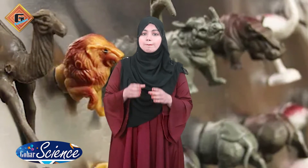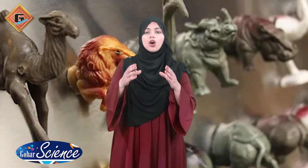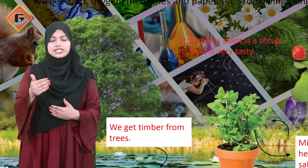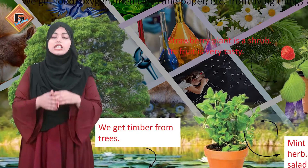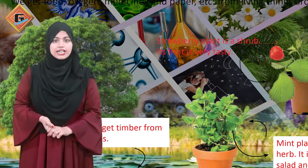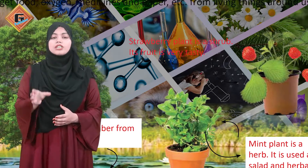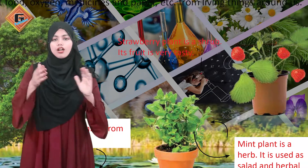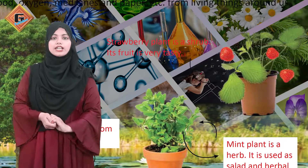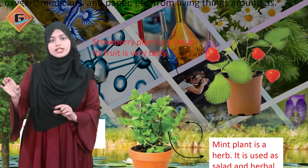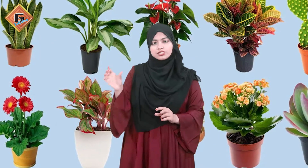To aap unke saamne students ko usme se vertebrates aur invertebrates ko differentiate karke dikha sakti hain, aur bata sakti hain ki inko hamnne backbone ki base par — backbone ke characteristics ki wajah se, backbone ka jo hamaara organ hai uski wajah se — hamnne isko differ kiya hua hai. Saath hi saath aap plants ke organs bhi bata sakti hain. Tab students ko ek assignment mein unho ne apni size ki copy pe plant ko draw karke lana hai, uska structure bana ke lana hai, uske organs likhne hain, aur un organs ke baare mein thoda-thoda sa explain bhi karna hai.